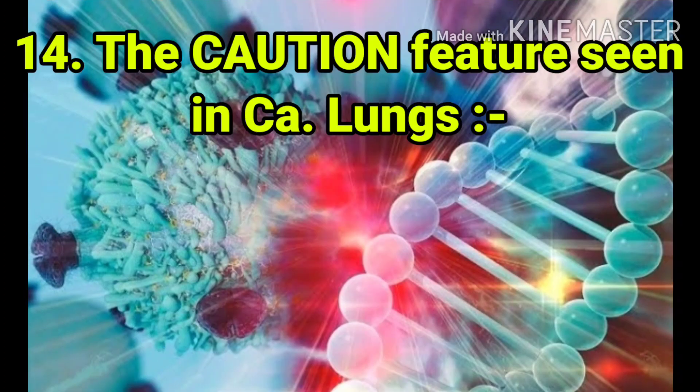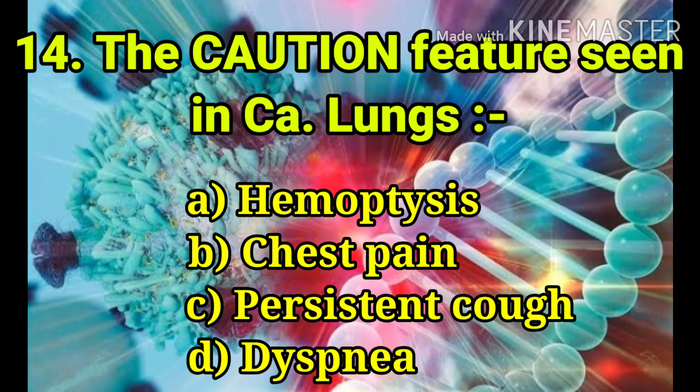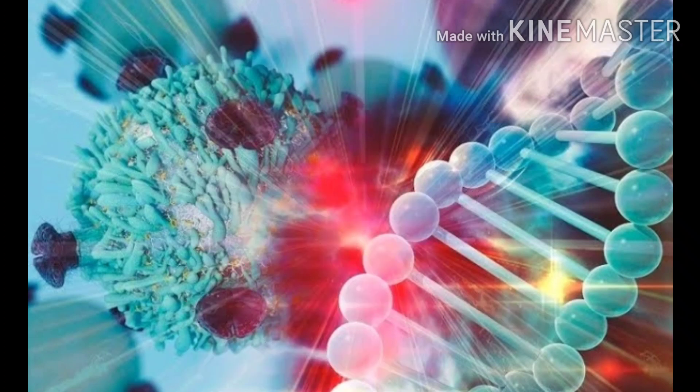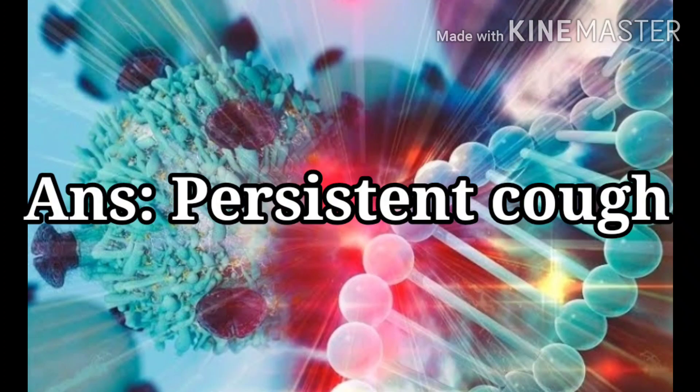The next question: the caution feature seen in CA lungs. The options are hemoptysis, chest pain, persistent cough, and dyspnea. The answer is persistent cough.